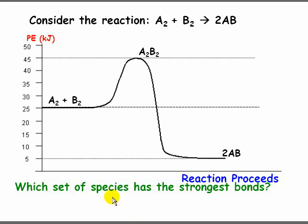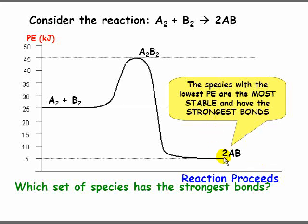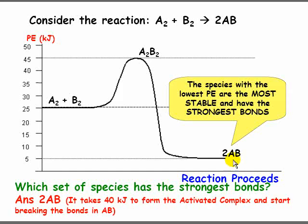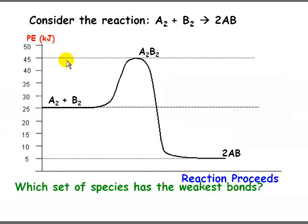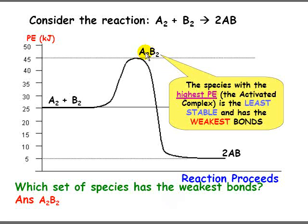Another question sometimes asked is: which set of species has the strongest bonds? The choices are A₂ and B₂, or 2AB. The species with the lowest potential energy are the most stable and have the strongest bonds, so the answer is 2AB. Conversely, which set has the weakest bonds? The set with the highest potential energy is the least stable and has the weakest bonds — that is the activated complex.